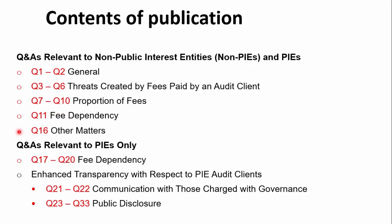Question 16 covers other matters, including who can perform post-issuance and pre-issuance reviews — the hot review, the EQR — in terms of the new international quality management standards, and who can perform post-monitoring reviews. Those would need someone with the necessary expertise in auditing and accounting. For PIEs only, questions 17 to 20 cover fee dependency, and then the enhanced transparency regarding communication to those charged with governance — directors or audit committees — and public disclosure as well.